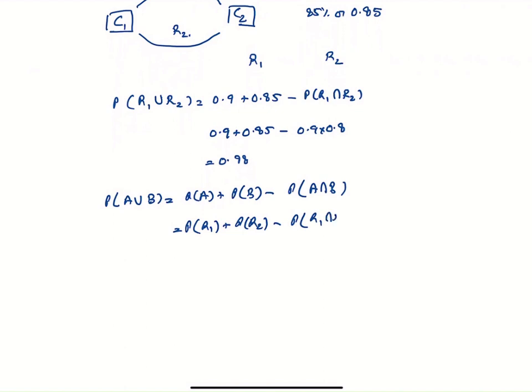But since these are independent events, probability of R1 and R2 is equal to R1 times R2.